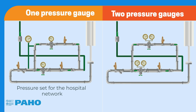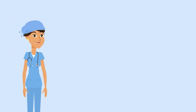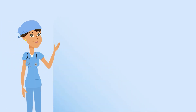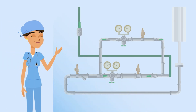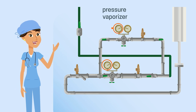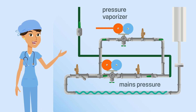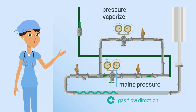When it has two pressure gauges, the one on the left measures the pressure of the evaporator circuit, which is higher, while the one on the right measures the lower pressure provided for the network's operation. In the design shown here, the station uses pressure regulating valves with a single pressure gauge. In this case, the station uses a separate manometer to measure the oxygen pressure in the vaporizer circuit.